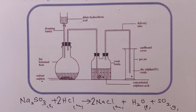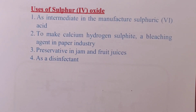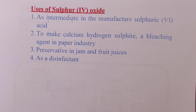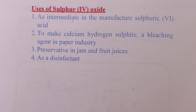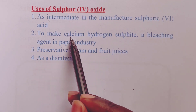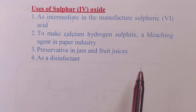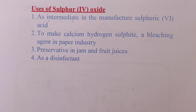We now look at uses of sulfur dioxide. It is mainly used as an intermediate during the manufacture of sulfuric acid in the contact process — we further oxidize it to sulfur trioxide, which then gives us the acid. Sulfur dioxide is also used to make calcium hydrogen sulfite, a bleaching agent in the paper industry, as a preservative in jam and fruit juices, and as a disinfectant.